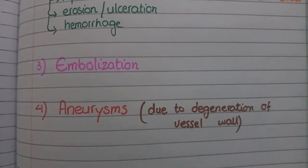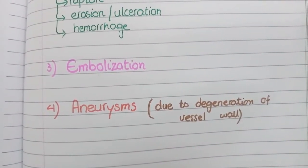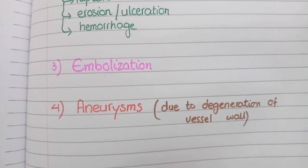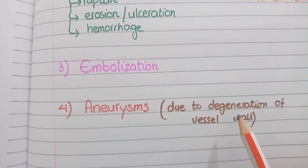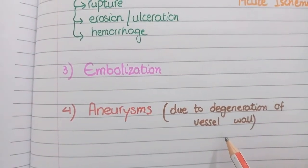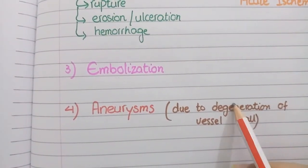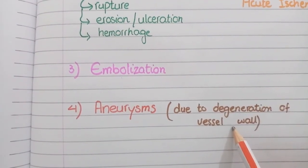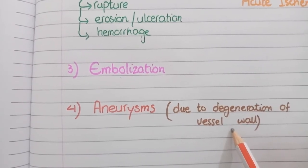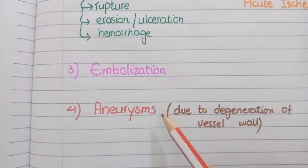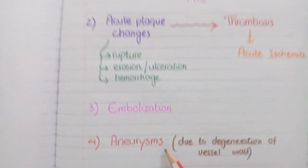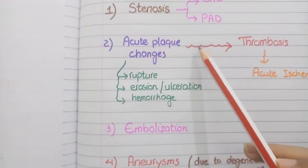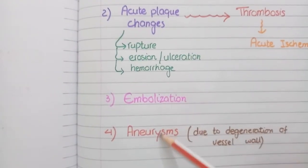The fourth consequence is aneurysm formation. Atherosclerosis in the vessel wall acts as a mechanical barrier for diffusion of oxygen and nutrients from the vessel lumen into the vessel walls, causing ischemia to the tissue in the vessel wall. This results in degeneration of musculoelastic tissue, making the vessel wall fragile, causing the blood vessels to become dilated in the form of aneurysms. Overall, the clinical pathological consequences of atherosclerosis are stenosis, thrombosis, embolization, and aneurysms.